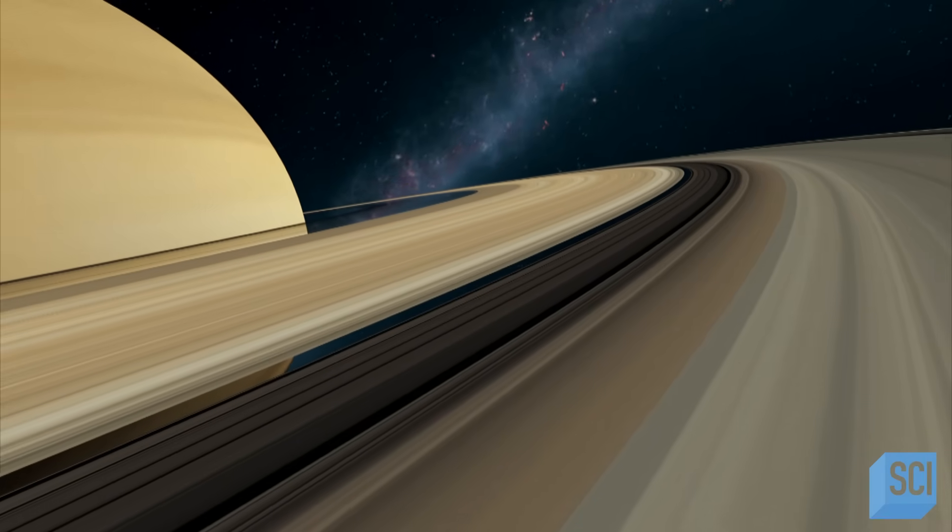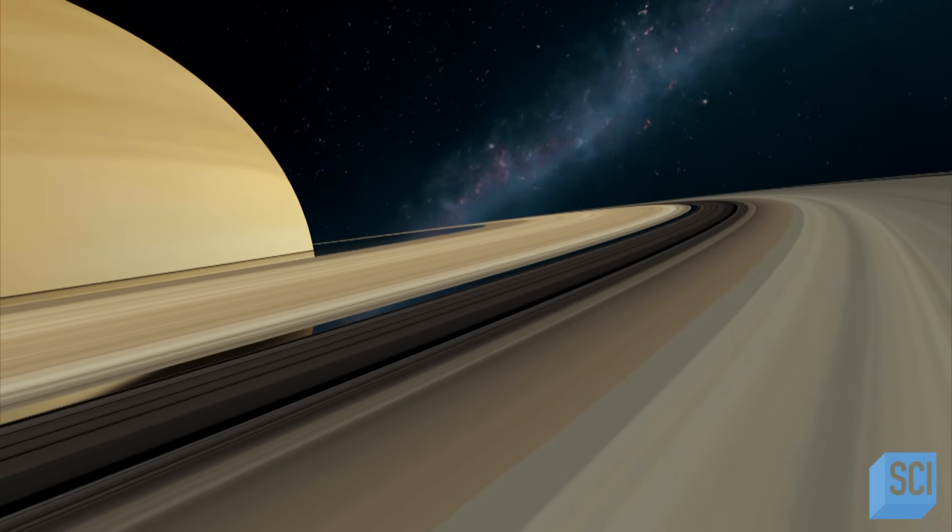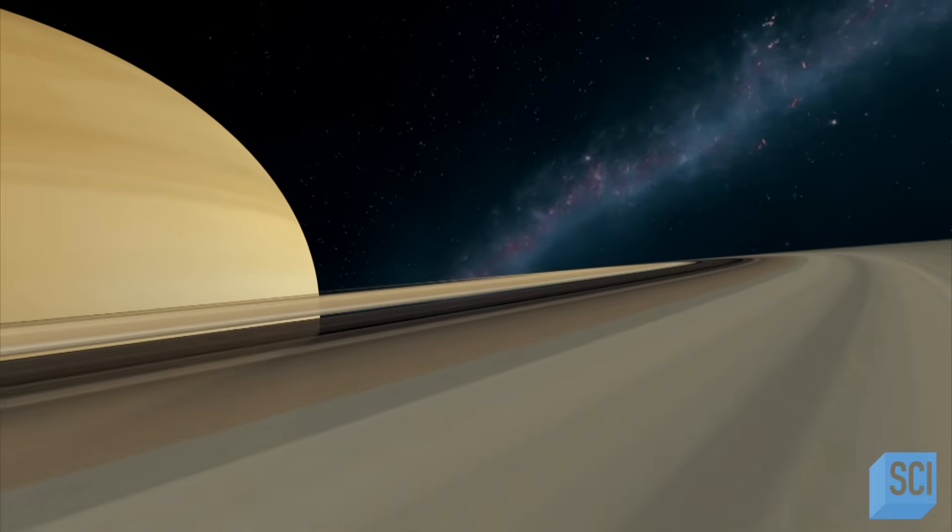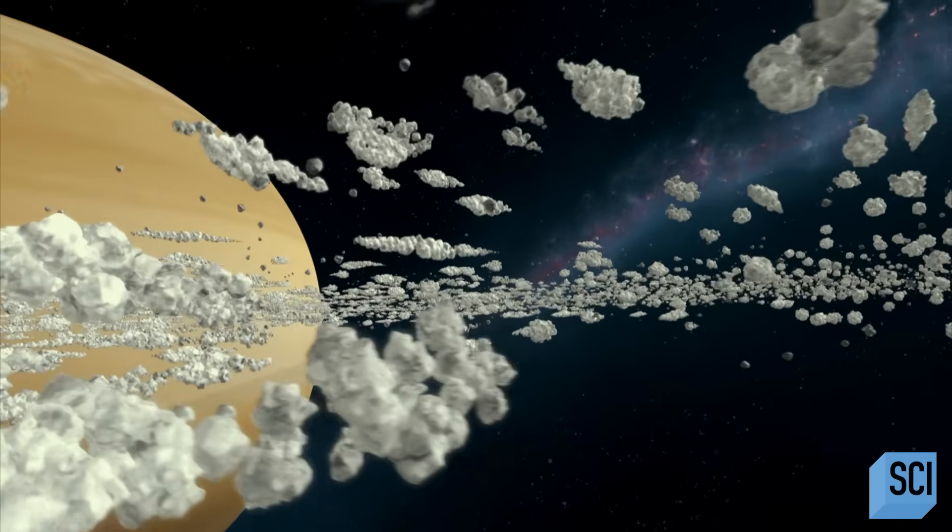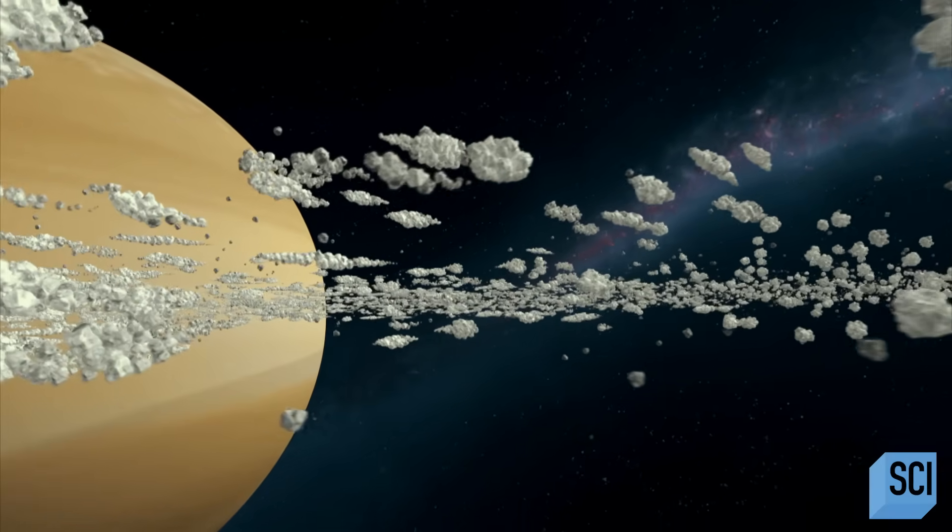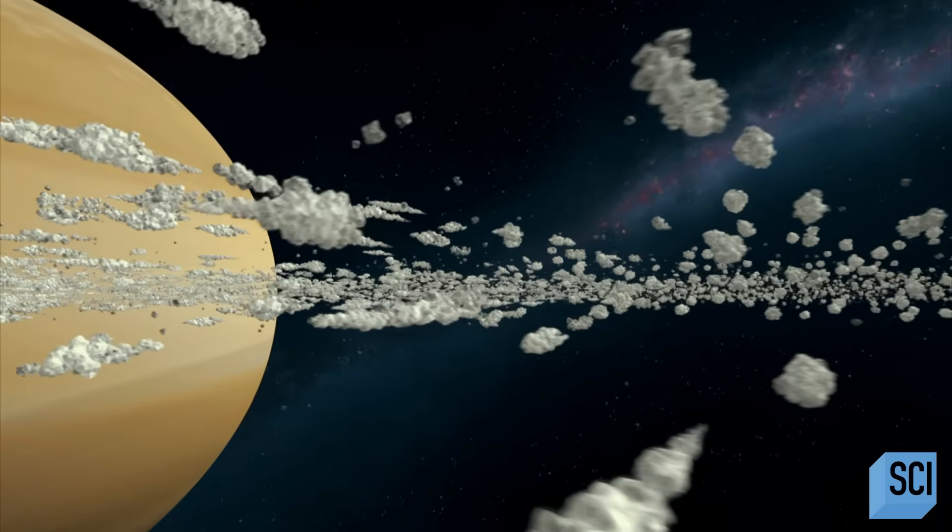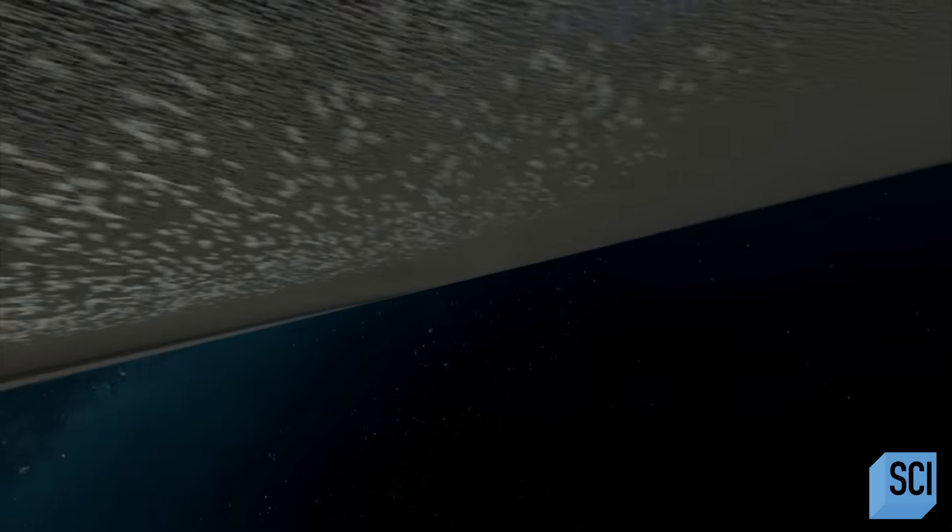Saturn's rings, the crown jewels of the solar system, spanning almost 175,000 miles. But a closer look reveals that they're extremely delicate, in most places only 32 feet thick. Inside them, ice, billions of particles, from superfine frozen dust to huge chunks the size of icebergs.